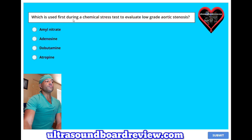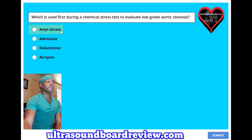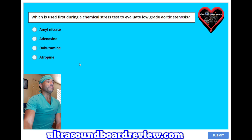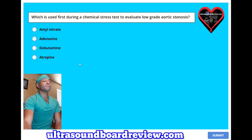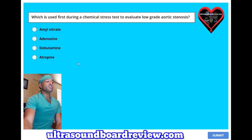Which is used first during a chemical stress test to evaluate low-grade aortic stenosis? A, amyl nitrate; B, adenosine; C, dobutamine; or D, atropine? The answer is C, dobutamine.